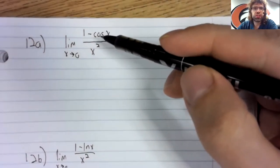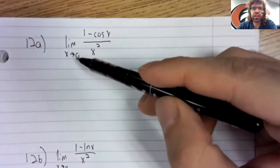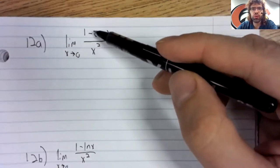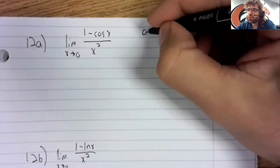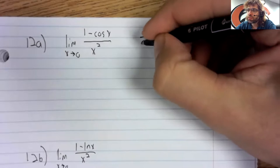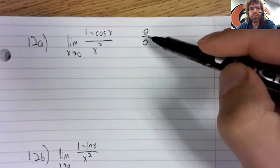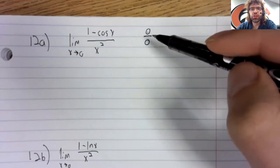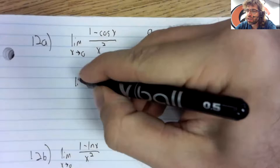Everything here is continuous. So to investigate limits, we can just plug zero in. The cosine of zero is one. One minus one. Zero squared. This is an indeterminate form, zero divided by zero.